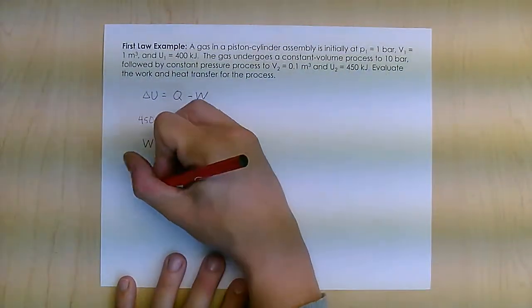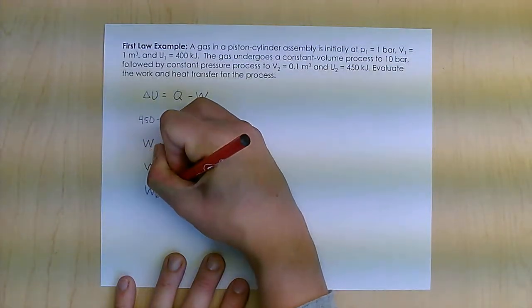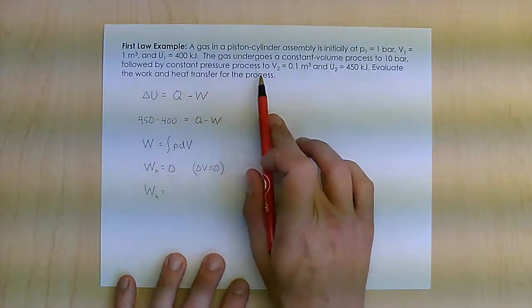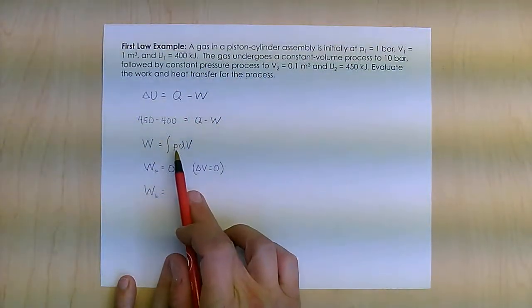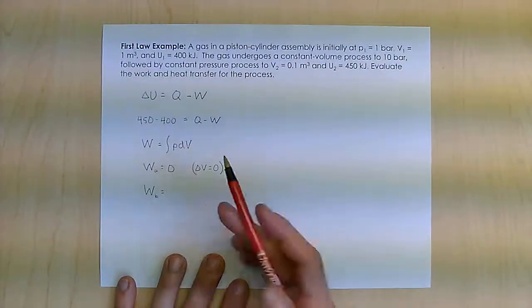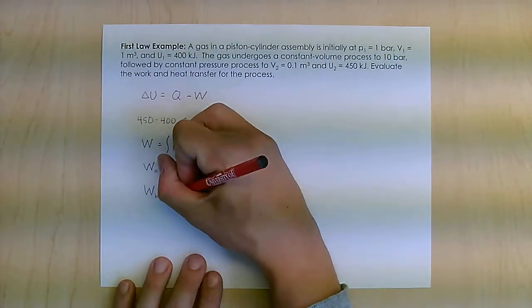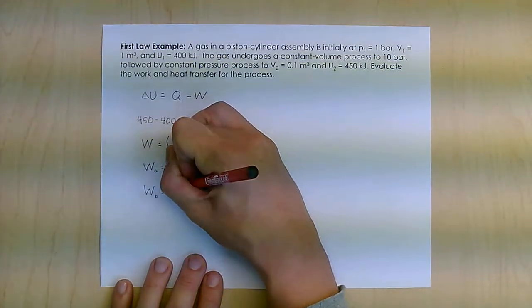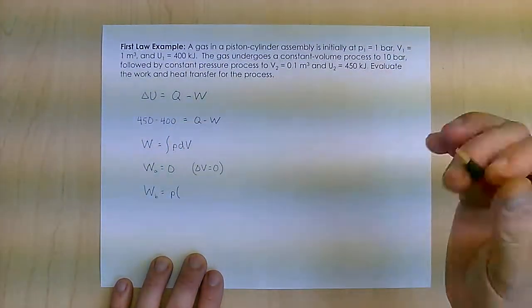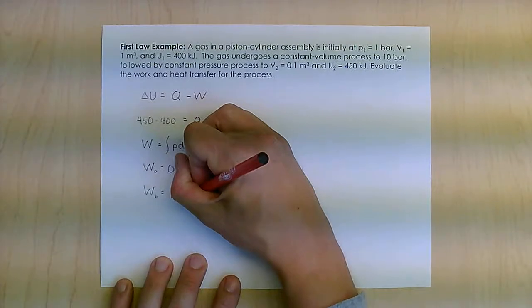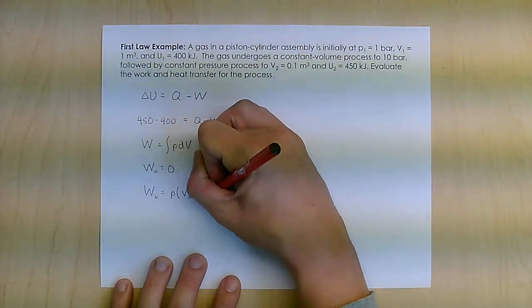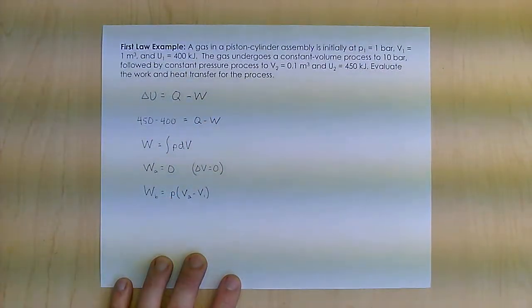The work of process B is the constant pressure process. If pressure is constant, it comes out, so it's just pressure times the change in volume. That's my pressure times my change in volume, which will be V2 minus V1.